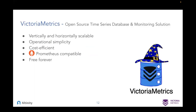So what is Victoria Metrics? Victoria Metrics is an open source time series database and monitoring solution. It can vertically and horizontally scale — meaning you can build a large cluster to process hundreds of millions of data points per second. It is also really simple to operate, because we put a lot of work into making it simple to run. It is cost efficient, Prometheus compatible, open source, and free forever.